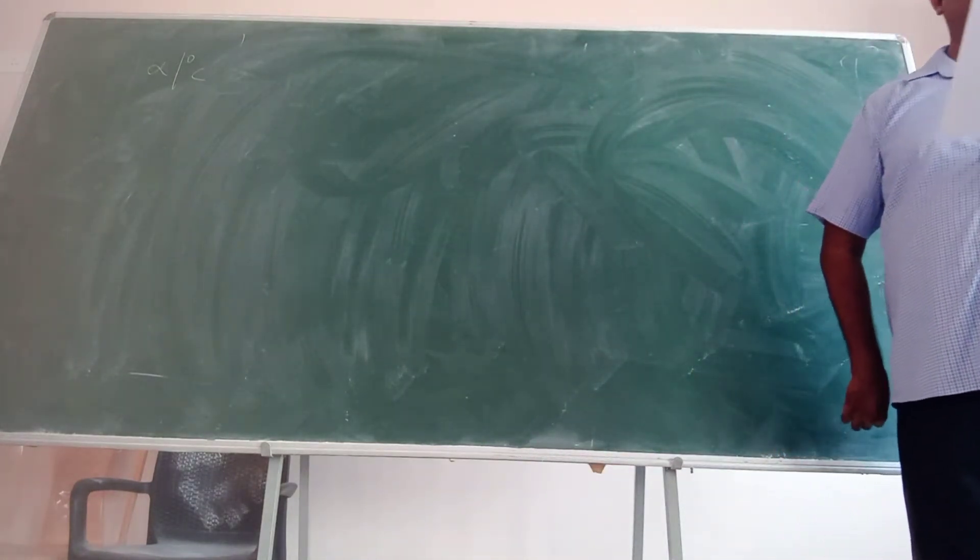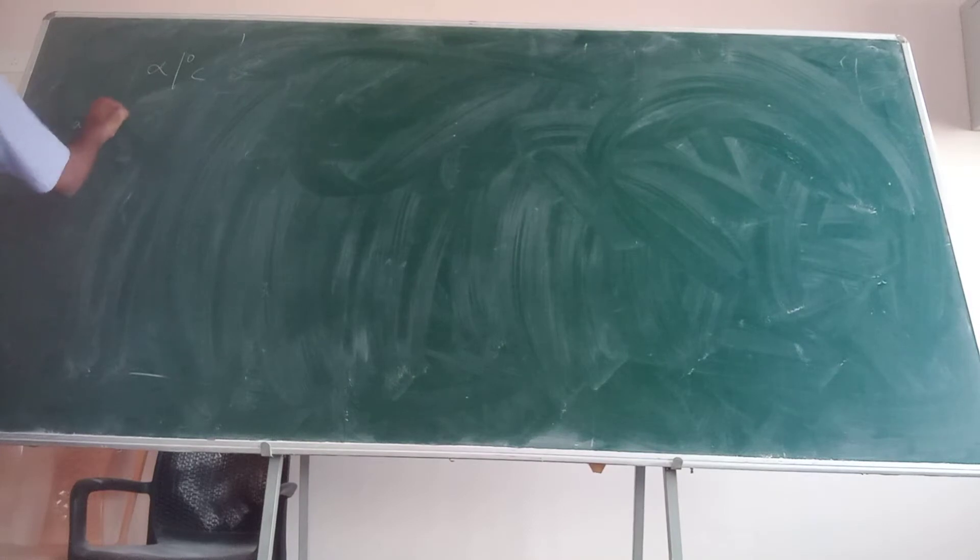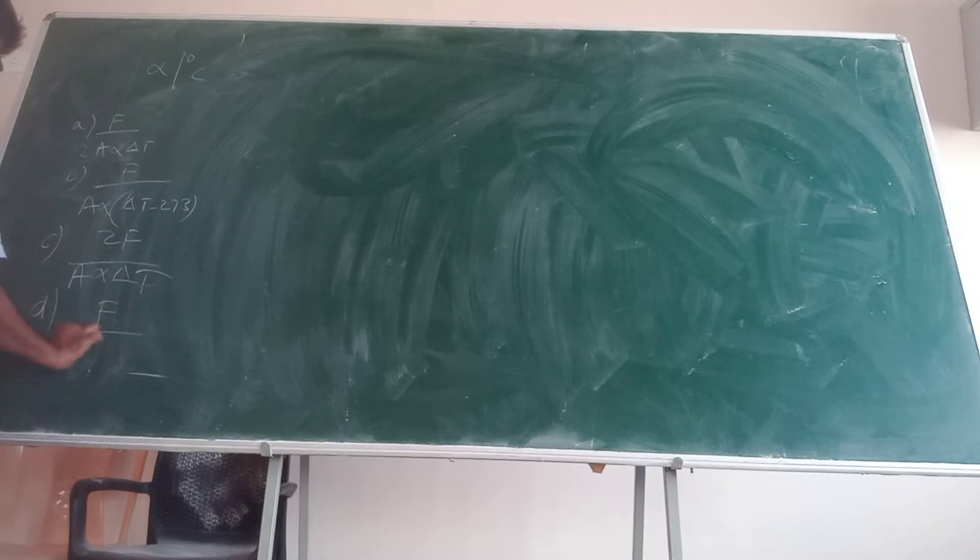Young's modulus Y for this metal is: Option A: F by 2A alpha delta T. Option B: F by A alpha delta T. Option C: F alpha delta T minus 273. Option D: 2F by A alpha delta T. I will give it a pause, you take over.